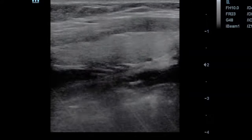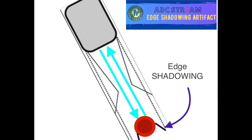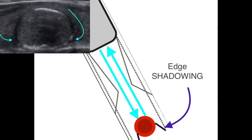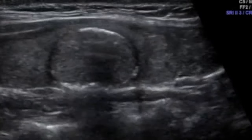Edge shadowing occurs at the edges of rounded structures due to a combination of refraction and reflection. When the ultrasound beam reaches the edge of a rounded structure, the outer part is reflected — with the angle of incidence equal to the angle of reflection — while the remainder passes through and is refracted. This combination causes a thin strip of tissue behind the edge to not be insonated at all, creating a very thin shadow line going distal to the rounded structure.